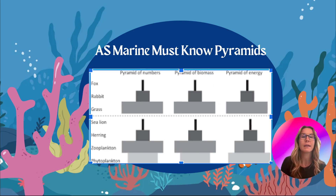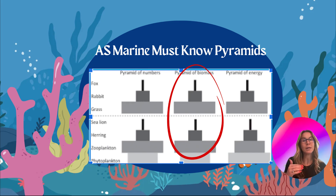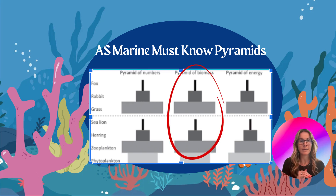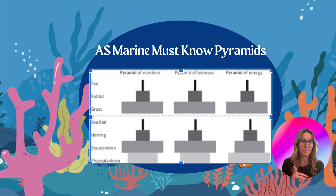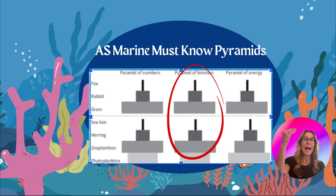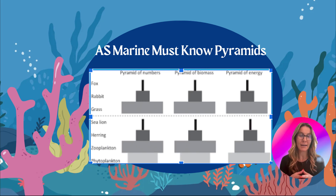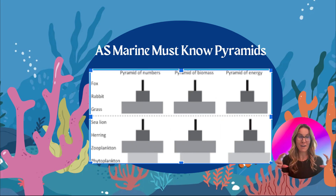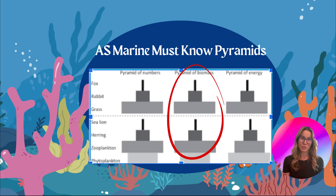The pyramid of energy shows how energy is transferred from producers up to the top-level consumers. Across all pyramids, autotrophs — organisms that make their own food — are always at the bottom, and top-level consumers are always at the top. For ACE Marine, make sure you know all your pyramids, that they are rectangles, and that all bars are the same height. If trophic level one is five boxes high on a graph, then trophic level two should also be five boxes high.